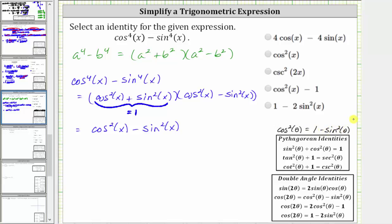Let's substitute 1 - sin^2(x) for cos^2(x). Performing the substitution gives us (1 - sin^2(x)) - sin^2(x).